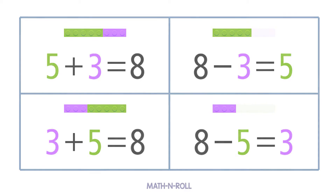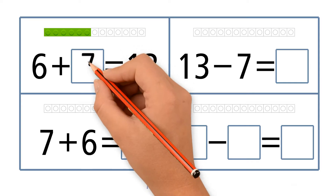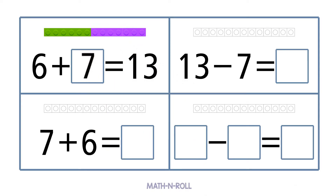Let's try an example. Use the model. Complete the related facts using addition or subtraction. 6 plus blank equals 13. Take a look at the model. We have 6 pieces. How many pieces do we need to add to get to 13 pieces? We need 7 more pieces. So 6 plus 7 equals 13.